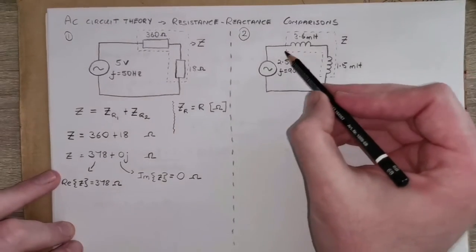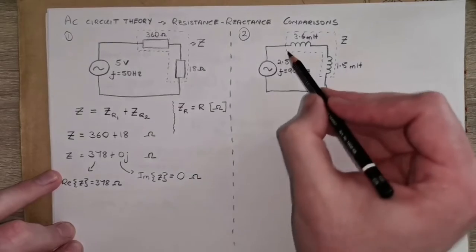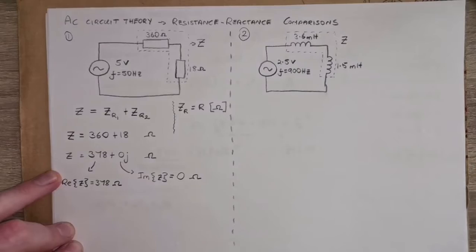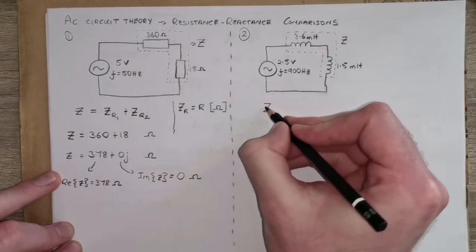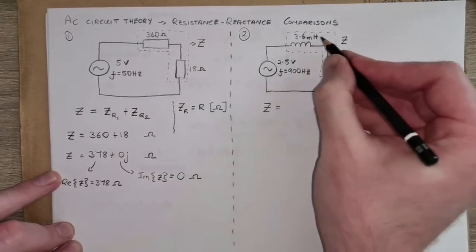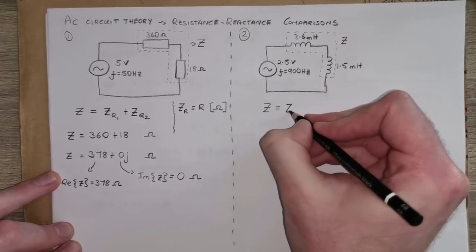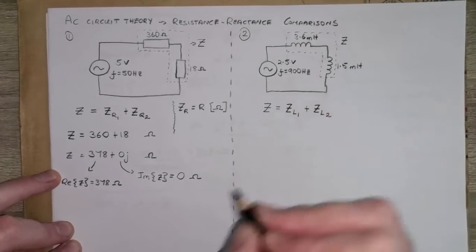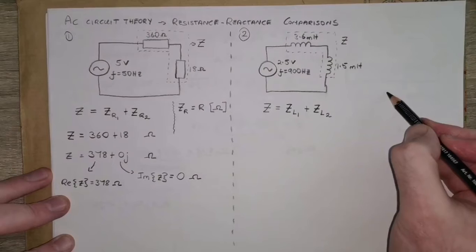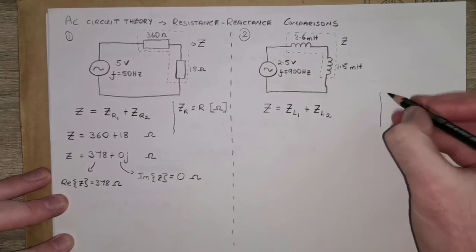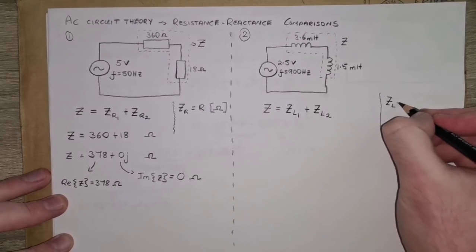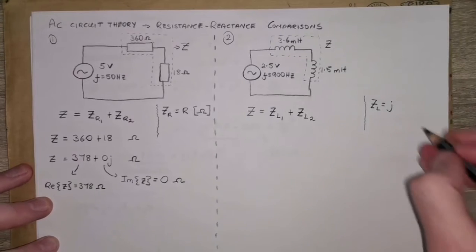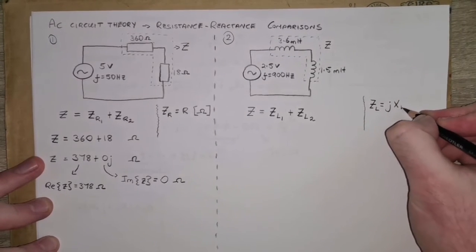Let's compare that to this second circuit. In this circuit we have two inductors — two reactive elements in our load. But we would approach this the same way. The overall impedance is these two impedances in series: Zl1 plus Zl2. What we need to recall is that the impedance of an inductor is reactive, so we have to multiply it by j.